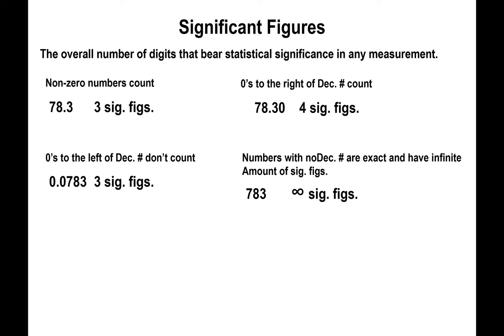You may also have numbers with no decimal digits, which could be exact numbers. You will only encounter exact numbers if you are told the number is not a measurement. If the number is a measurement, each digit counts and it's assumed you only have a decimal point with no decimal places — in which case you say it has three significant figures.